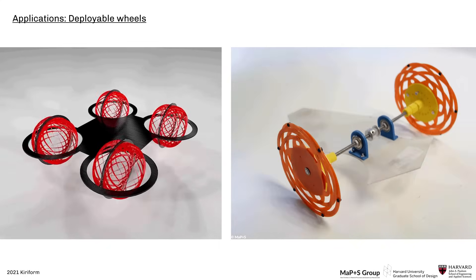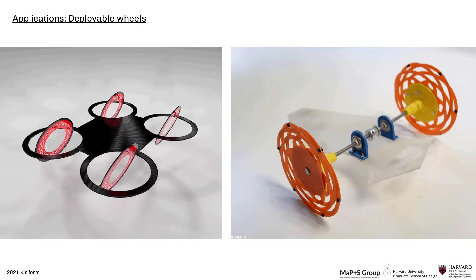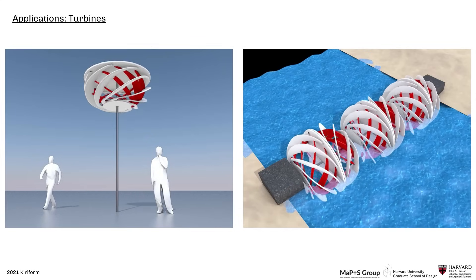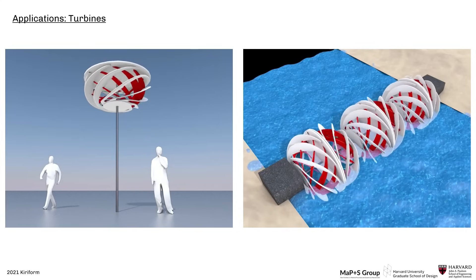Kiriform could be envisioned as deployable wheels that can adapt to different terrains by changing traction, or used as deployable turbines to adjust to high wind or water flows.